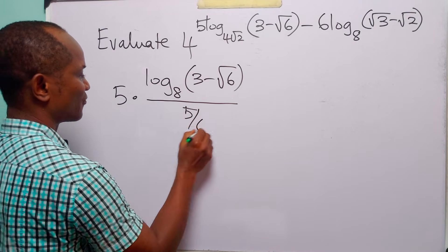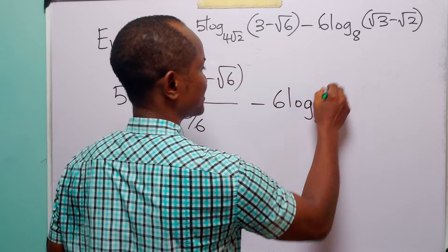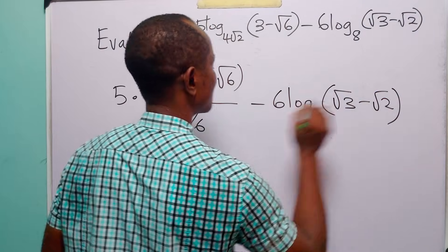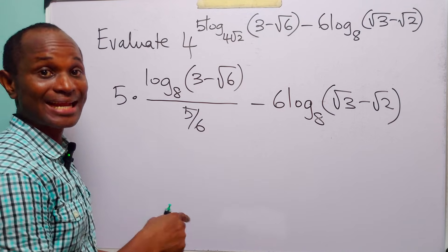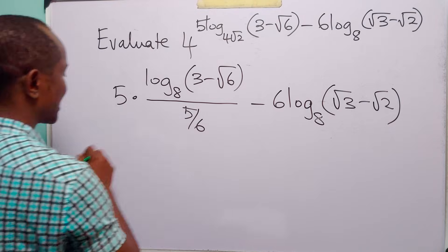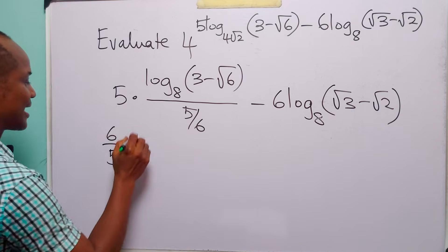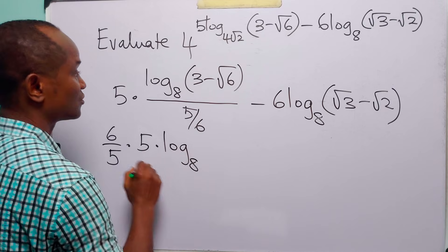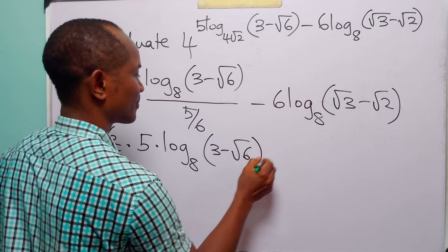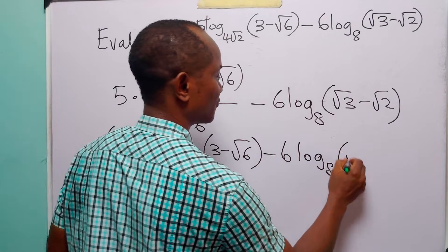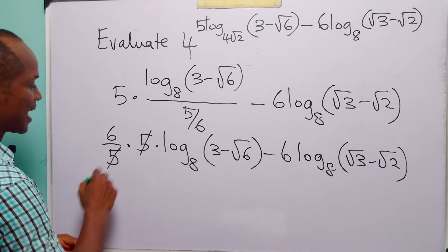So here we have 5 over 6. Then we have minus 6 times log to base 8 of root 3 minus root 2. When we divide by a fraction, it is the same as multiplying by the inverse of that fraction, so here we have 6 over 5 — the reciprocal of this denominator — and this 5 cancels that.